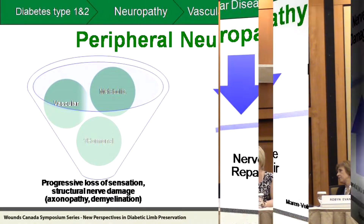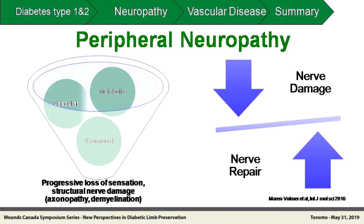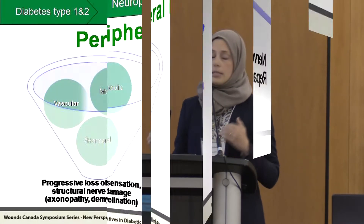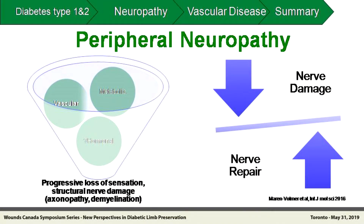Peripheral neuropathy is an interplay between different factors. We have the metabolic and vascular components, and each one individually doesn't fully explain the pathogenesis. There's also data suggesting hormonal aspects play a role: in a state of insulin deficiency, insulin plays a role in nerve repair, as do insulin-like growth factors such as IGF-1, and both are impaired in diabetes. Ultimately, the interplay of all these results in an imbalance favoring nerve damage over nerve repair, leading to progressive loss of sensation and structural nerve damage.